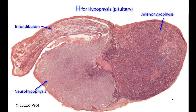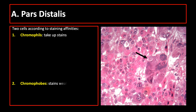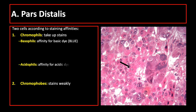In the pars distalis, there are two types of cells based on staining affinities of secretory granules: chromophils, which take up stains, and chromophobes, which weakly take up stains because they have few or no secretory granules. For chromophils, there are two subtypes: basophils, which have affinity for basic dye and appear blue, and acidophils, which have affinity for acidic dye and appear orange-red.